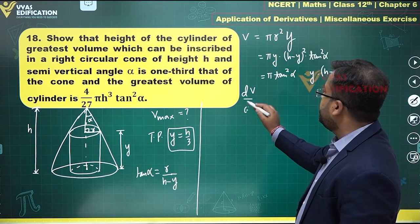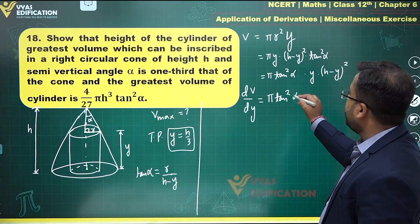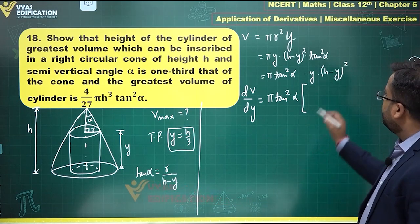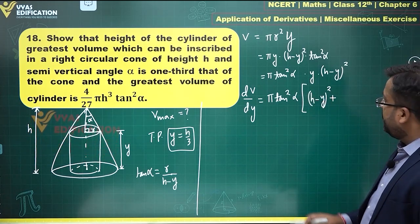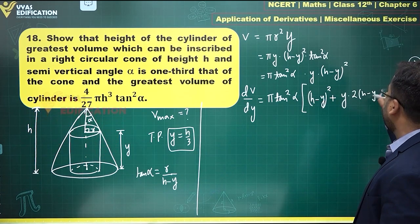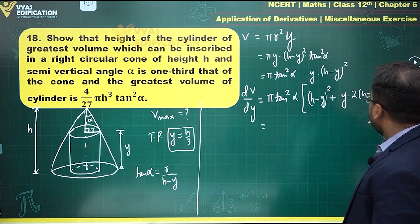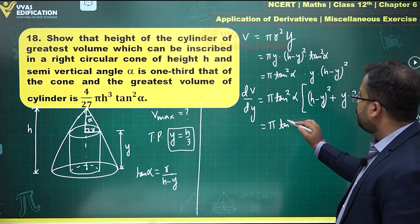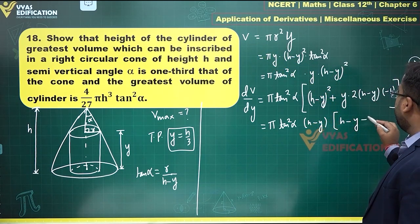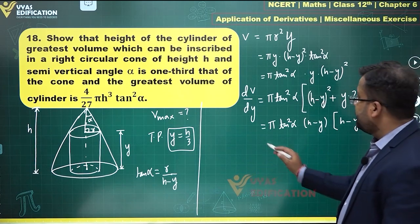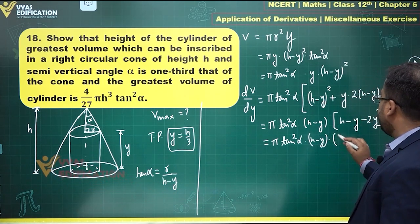Now dV/dy: π·tan²α remains constant. Applying the product rule to y·(h - y)², the derivative becomes (h - y)² + y·2(h - y)·(-1). Taking (h - y) common gives π·tan²α·(h - y)·[(h - y) - 2y], which simplifies to π·tan²α·(h - y)·(h - 3y).